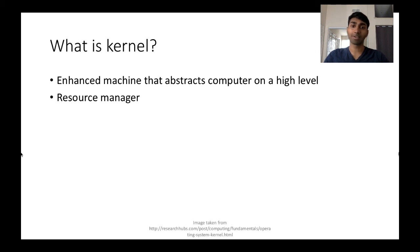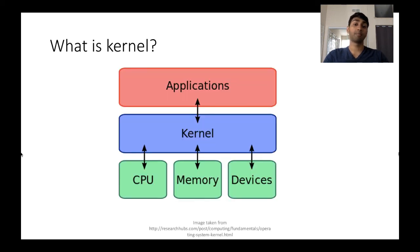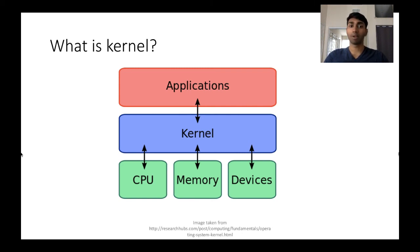A kernel can be thought of as an enhanced machine that abstracts the computer on a high level. A kernel manages resources — it sits right in between your application and your hardware. When you as a user give a command to the kernel to perform a certain task, it takes care of the complicated stuff, such as how a particular hardware is supposed to communicate, and returns the results back to the user. So basically, the kernel is like an assistant for you.